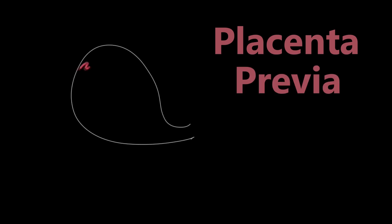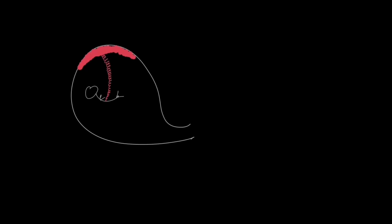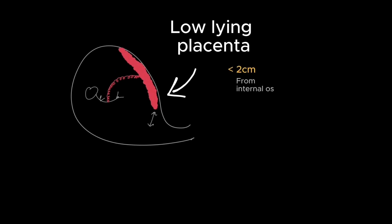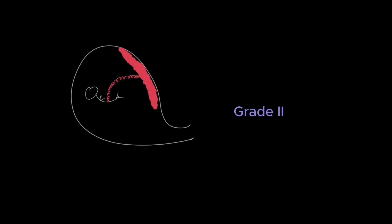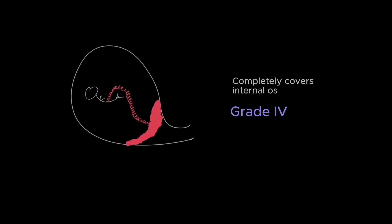In this video we'll talk about placenta previa, which means presence of the placenta in the lower uterine segment. A low-lying placenta is one within two centimeters from the internal os, or a grade 1 placenta previa. Grade 2 is when the placenta reaches up to or within one centimeter of the internal os. Grade 3 partially covers the internal os, and in grade 4 it completely covers the internal os.